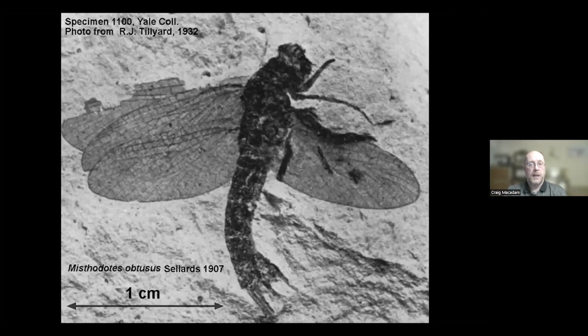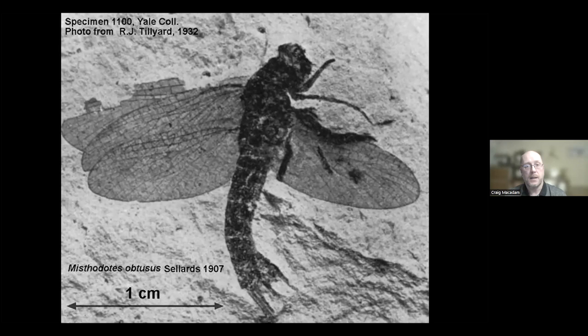Mayflies have a long history. They're thought to have evolved in the late Carboniferous period. This fossil from Kansas is from around 280 to 290 million years ago. You can see the tails characteristic of mayflies today, and you can also see that both forewings and hindwings are the same size, more like a modern dragonfly. In these ancient times, mayflies had equal-sized wings, which have reduced over time.